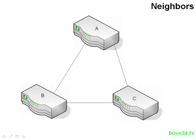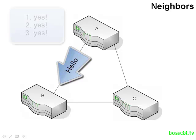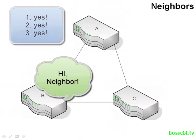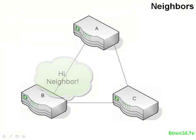The overall process to become a neighbor is pretty straightforward: first you discover your neighbors, then you verify that you can actually become neighbors, and then you're a neighbor. After that, you're free to start exchanging network information with that other router. This is a much simpler process than the one covered in OSPF — there are no different states to worry about.